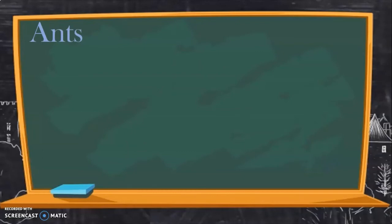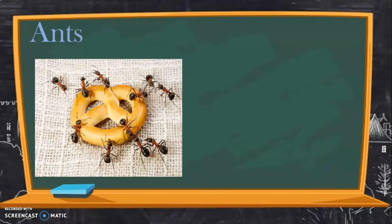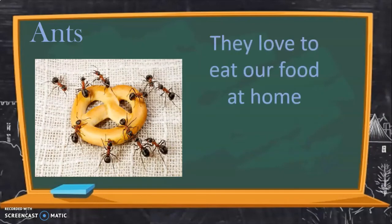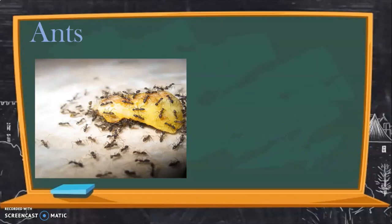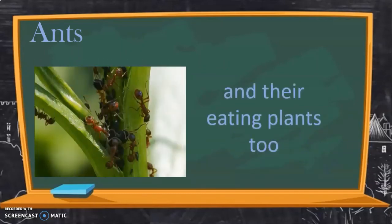There we go. Yes, that's the ant. Okay, and they love to eat our food at home. Do you agree that? Yes, especially sweet food. Just like this one. Okay, they love to eat our food, especially sweet food. And sometimes ants are eating plants too. So not just the food at home, they're eating a plant too.